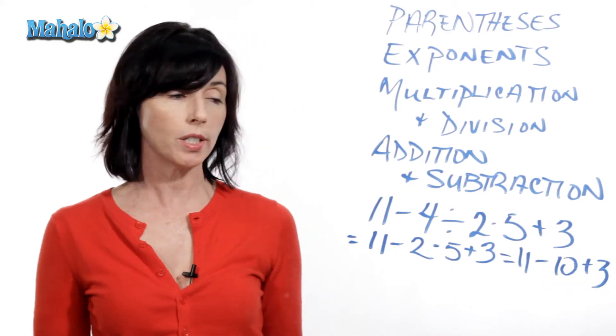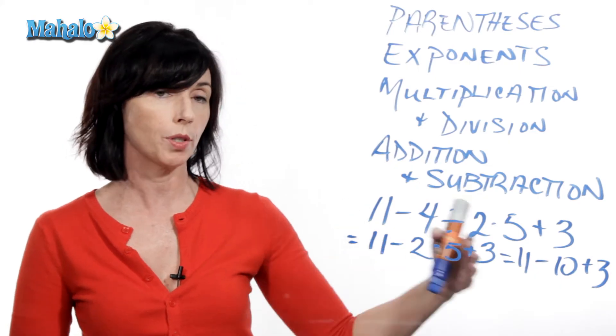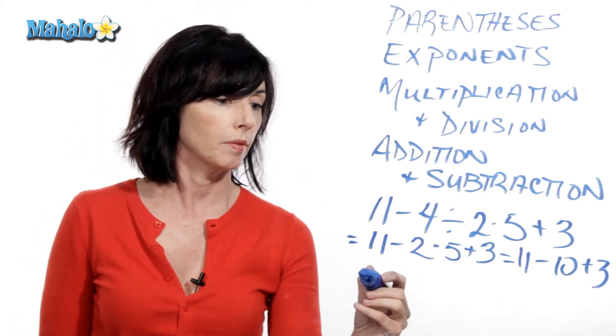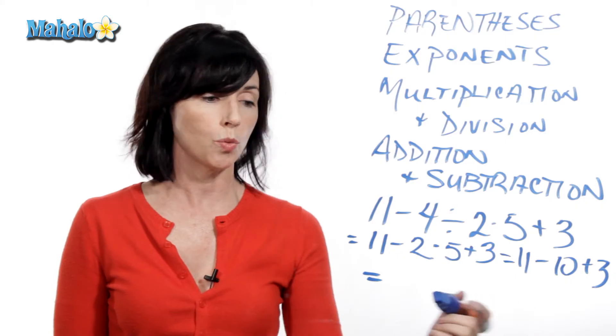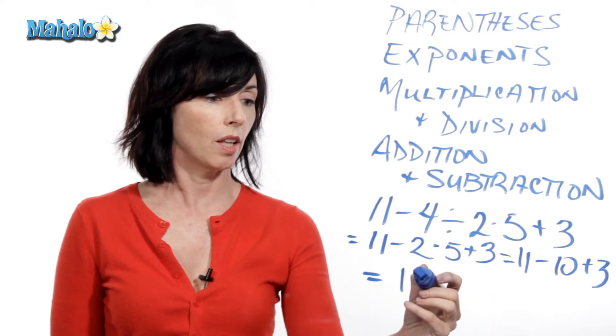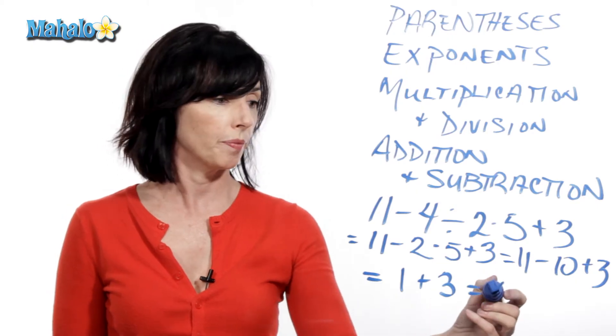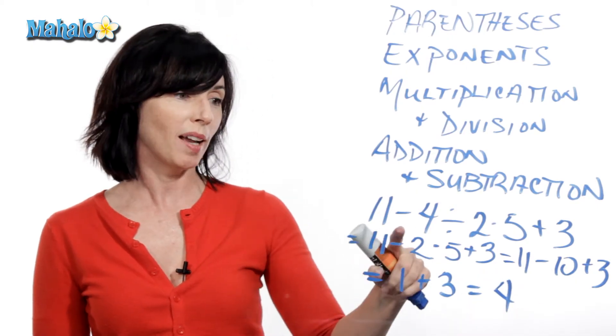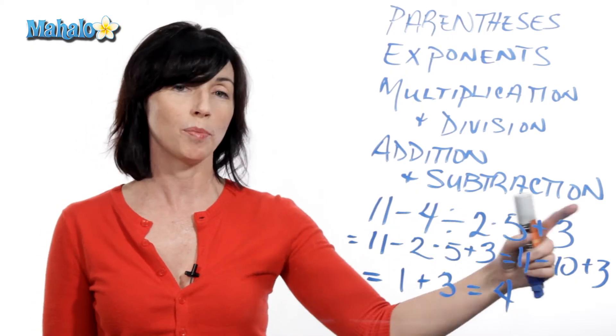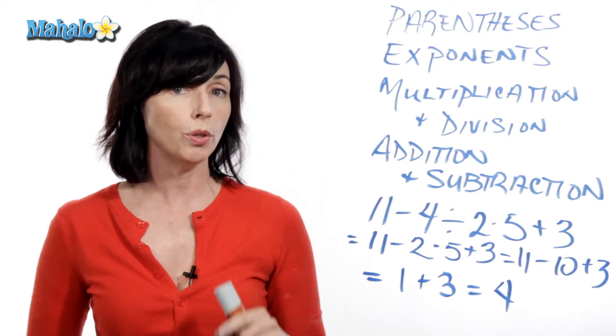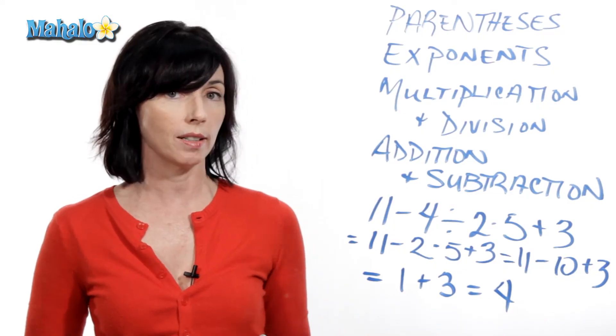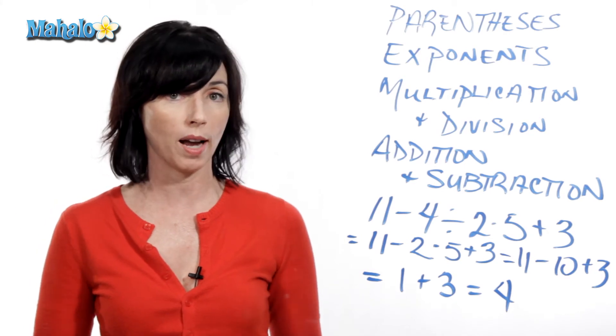Okay. So now I just have addition and subtraction, and I'm going to do them left to right. 11 minus 10 is 1. And then I still have my plus 3. 1 plus 3 is 4. So, 11 minus 4 divided by 2 times 5 plus 3 is really just equal to 4. If you don't use order of operations, you can very easily get a different answer, and it won't be the correct one.